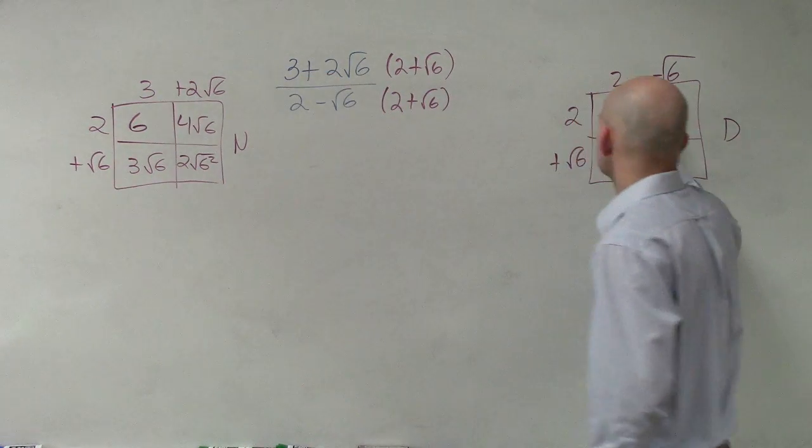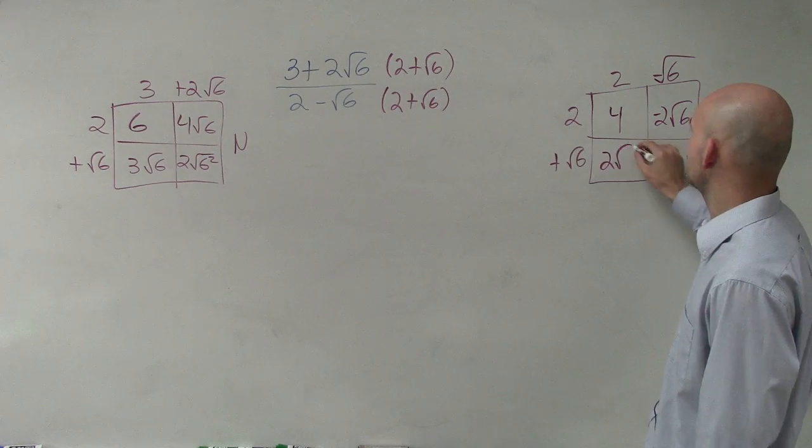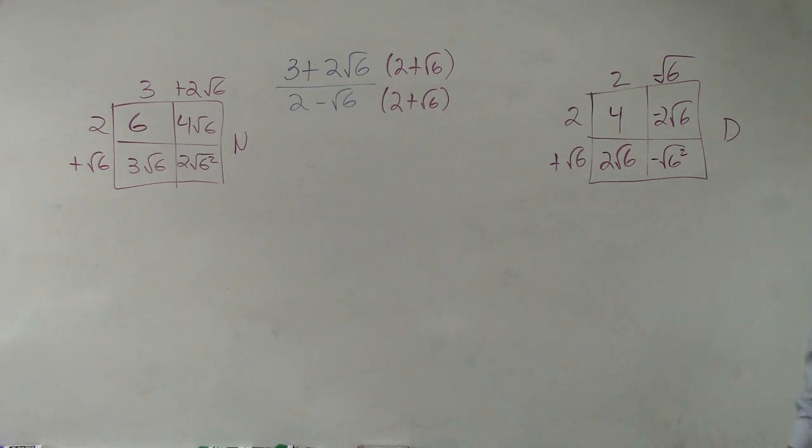Over here, 2 times 2 is 4. 2 times negative square root of 6 is negative 2 square root of 6. 2 times positive square root of 6 is 2 square root of 6. Square root of 6 times negative square root of 6 is negative square root of 6 squared, we'll simplify that in a second.